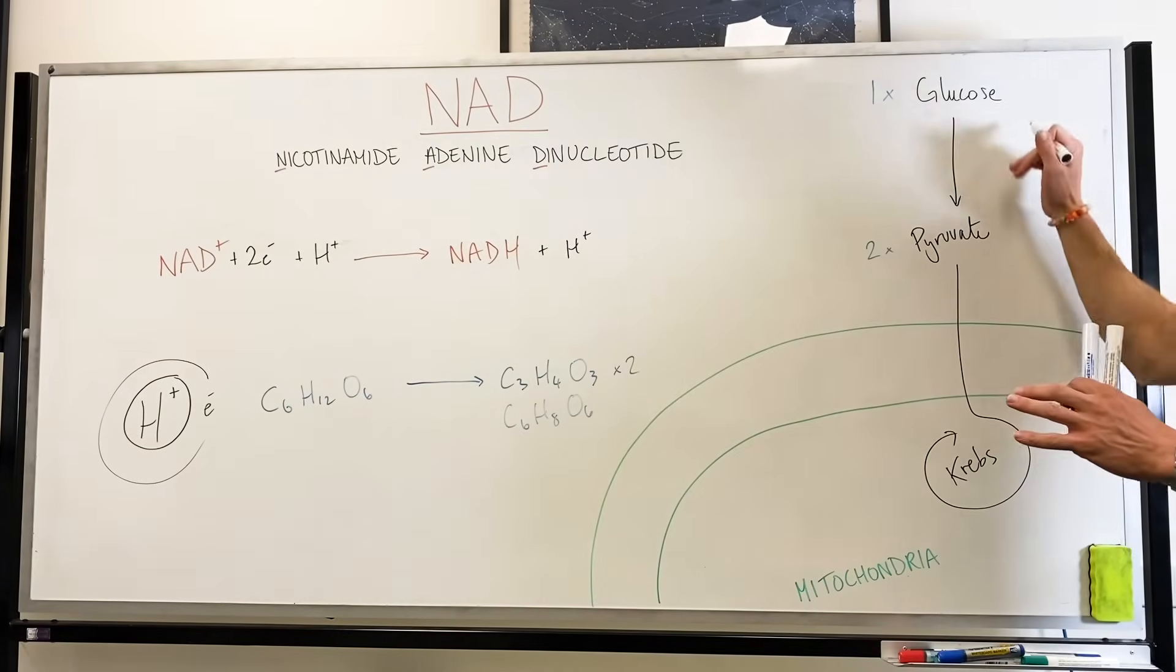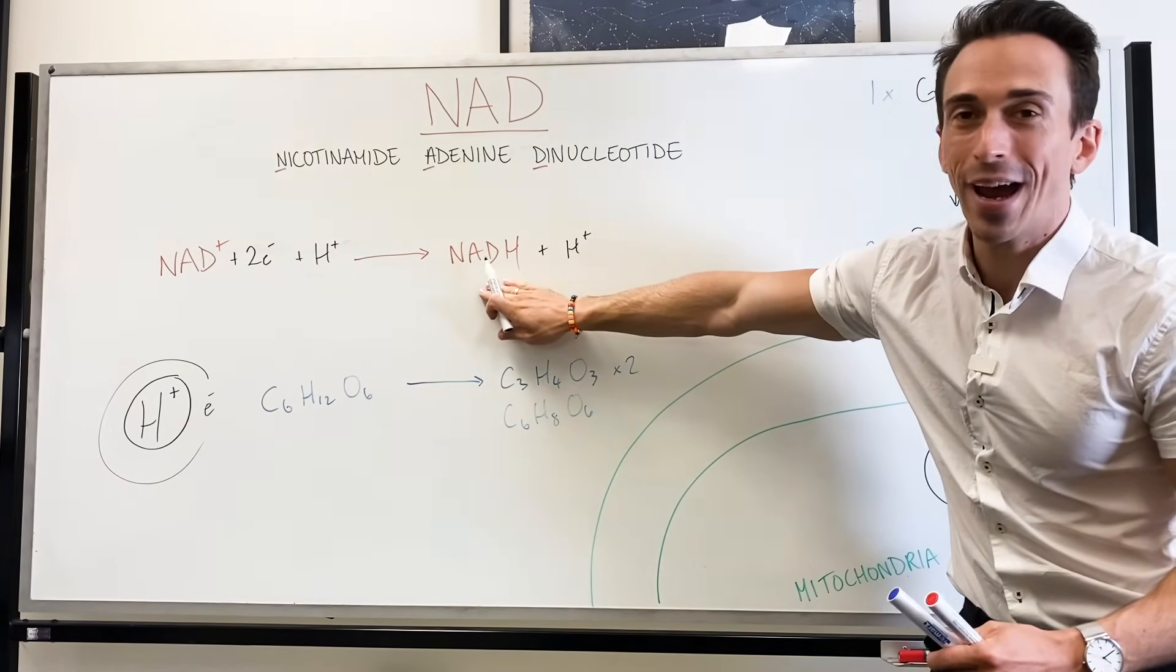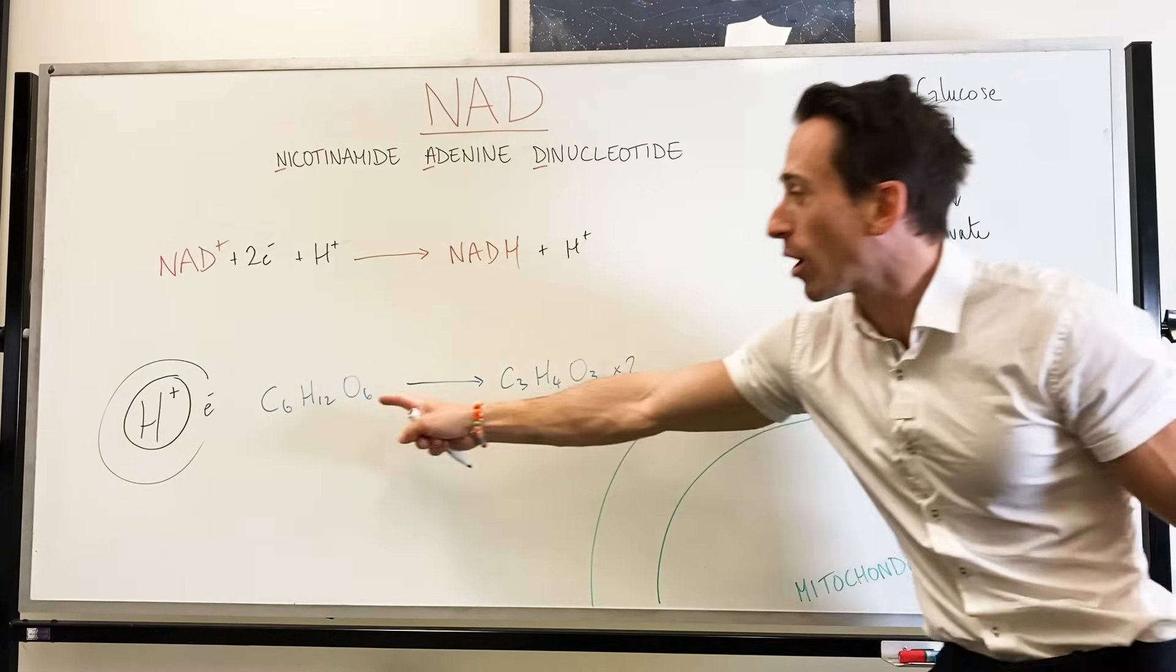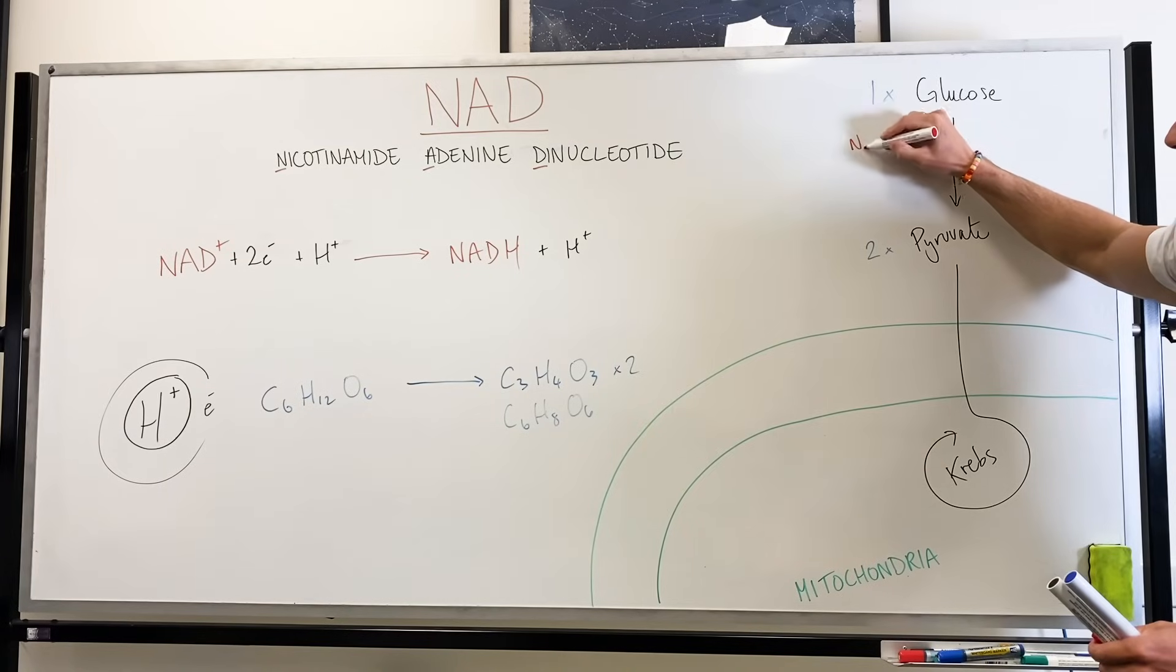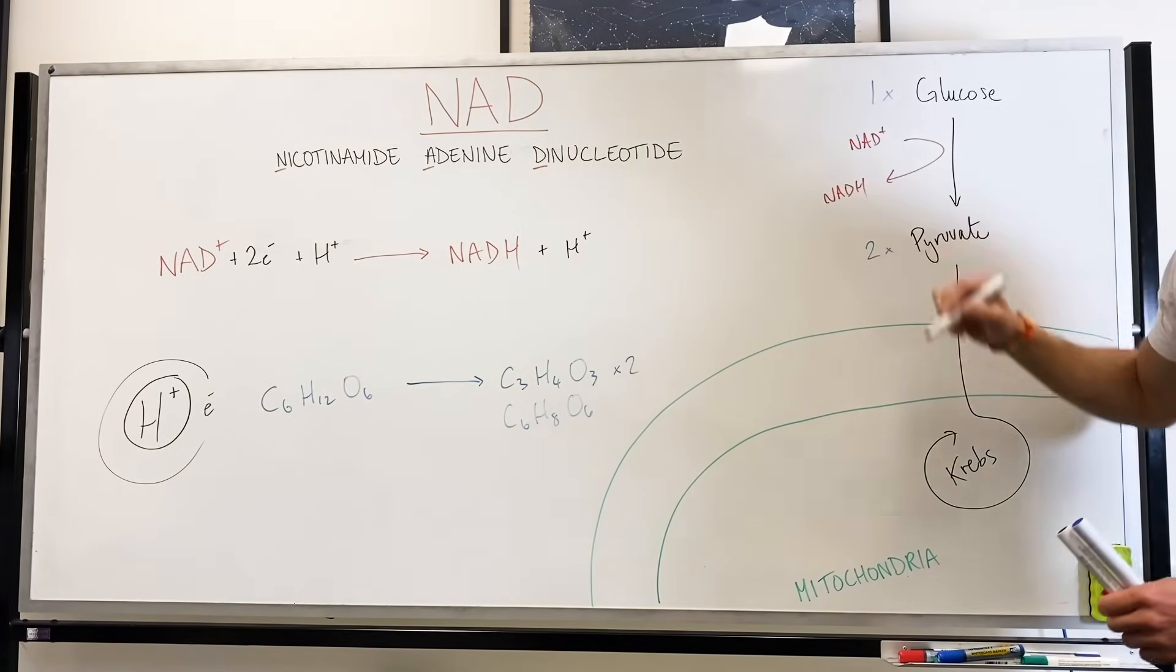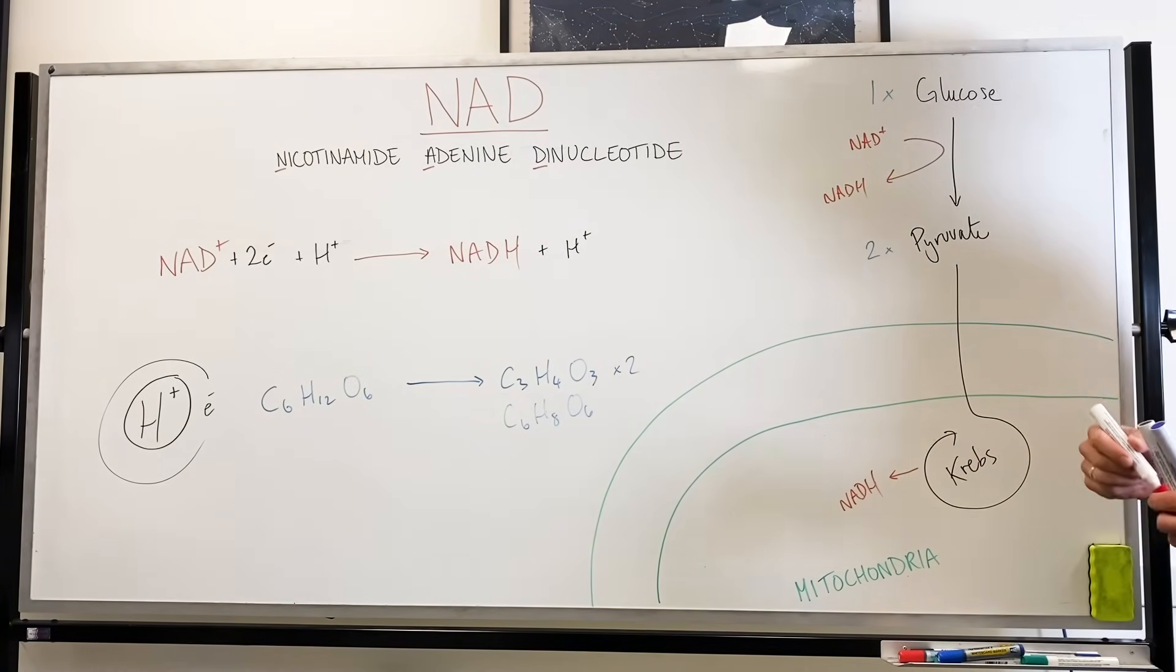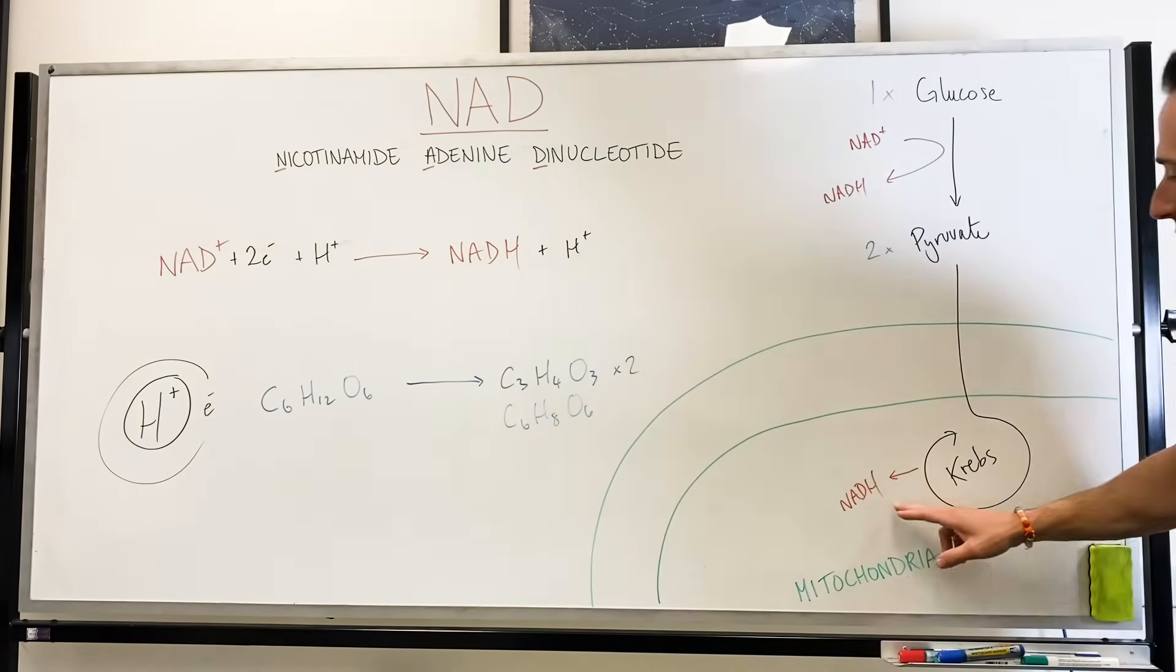Now when we look at glycolysis, this process of glucose to pyruvate, we produce two NADH, which means we use four hydrogen. Eight, nine, ten, eleven, twelve. There's the four hydrogen from going from glucose to pyruvate. It makes total sense. So we're actually producing here, we take NAD+ and we turn it into NADH. The same thing actually happens in this Krebs cycle. We also produce NADH. Now why? Why does it want to do this process?